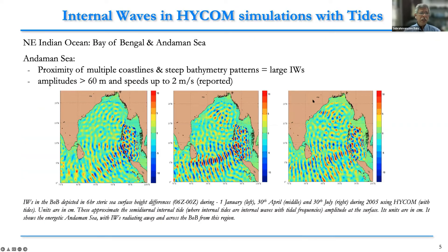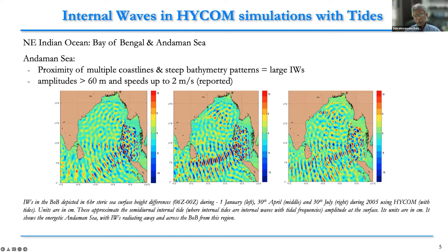Before studying using ECHO estimates, we used a hybrid coordinate ocean model (HYCOM) with tides. Here you can see that during January, April, and July 2005, we saw internal wave generation in the NMNC and a propagated northward branch goes towards Vishakhapatnam.